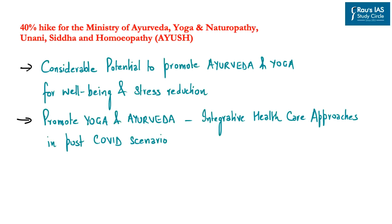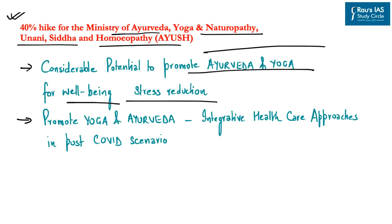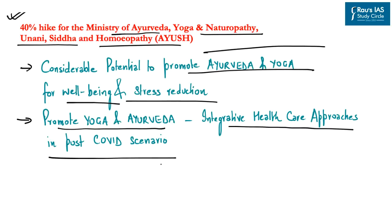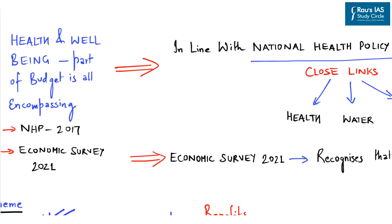The article highlights a 40 percent hike in allocation for the Ministry of Ayurveda, Yoga and Naturopathy, Unani, Siddha and Homeopathy — the Ministry of Ayush. There is considerable potential to promote Ayurveda and yoga specifically for well-being and stress reduction, and scope to promote them as integrative healthcare approaches in the post-COVID scenario. The article concludes that the health and well-being covered in the Union Budget 2021 is in synchronization with the National Health Policy of 2017 and the Economic Survey of 2021.